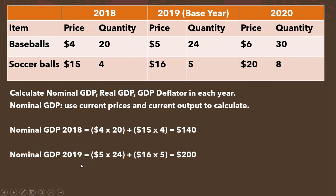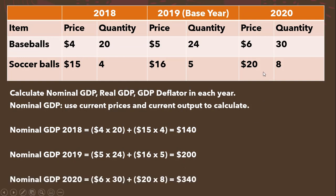Nominal GDP in 2019 uses the current 2019 prices and 2019 quantities: 5 times 24 plus 16 times 5 gives us $200 of nominal GDP in 2019. And in 2020, calculating GDP at current prices — $6 and $20 — multiplied by the respective quantities, we get nominal GDP of $340 in 2020.